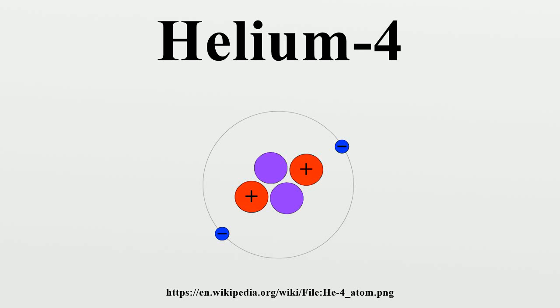Helium-4 is a non-radioactive isotope of the element helium. It is by far the most abundant of the two naturally occurring isotopes of helium, making up about 99.999986% of the helium on Earth.